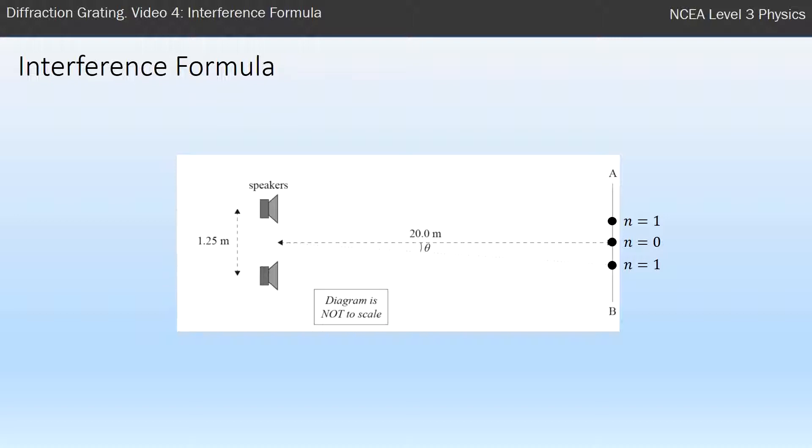So in between, if you were walking from N equals zero to any of the N equals ones, you'd go from loud to quiet to loud again. And then the next loud spots out have the numbers two and two and you keep counting and so on.